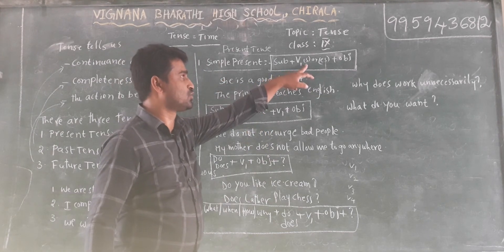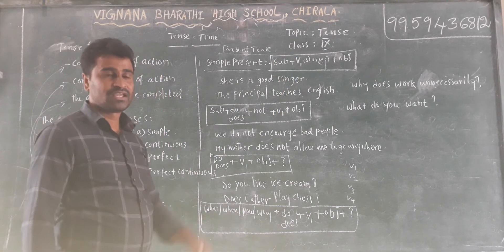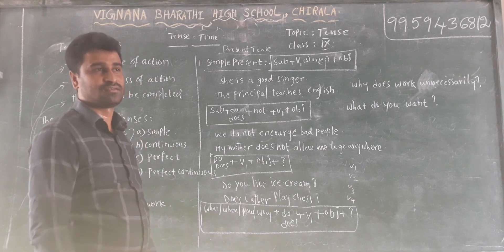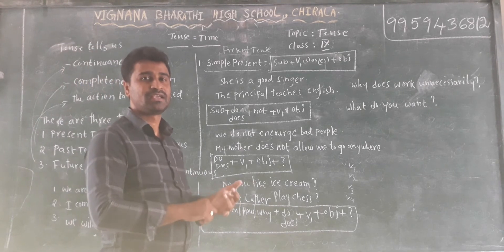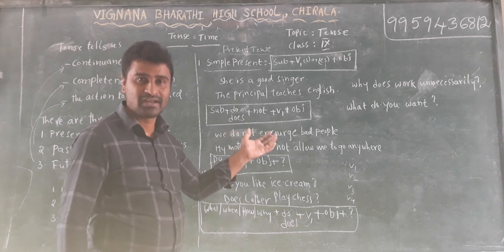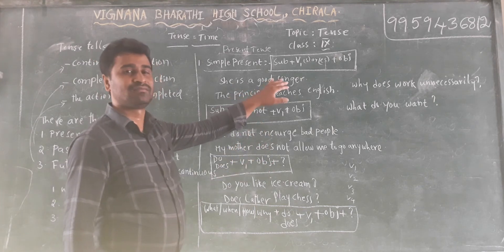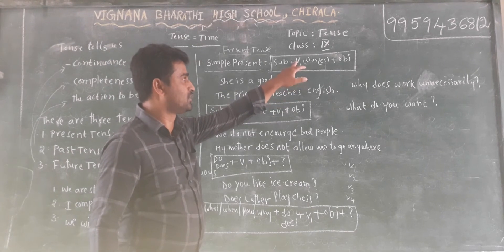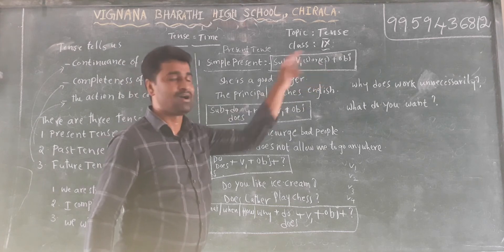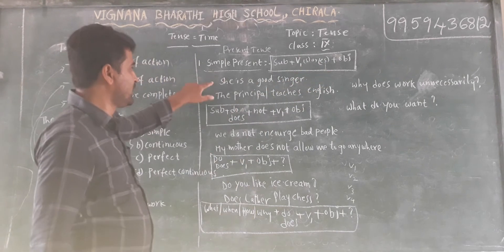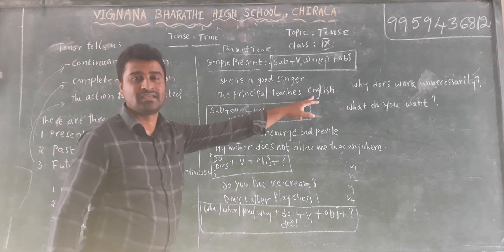If you are writing third person singular — he, she, it, or any other names, persons, places, things — if they are singular and third person, we add 'S' or 'ES' to the verb V1. See here: 'She is a good singer.' 'The principal teaches English.' Subject is 'the principal', and 'teaches' has 'es' added because it is third person singular.